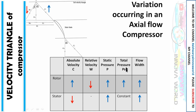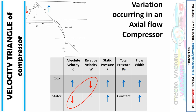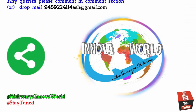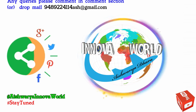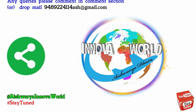In the rotor, the total pressure increases. But in the stator, because the blades are not rotating, the total pressure remains constant. Remember this chart: absolute velocity, relative velocity, static pressure, total pressure, and flow width. In the rotor, both static and total pressure increase. In the stator, only the static pressure increases while total pressure remains constant. This is a fundamental conceptual question frequently asked in exams, so please focus on it. Stay tuned for more easy tricks in my upcoming videos. If you have further inquiries, please comment below and share with your friends.